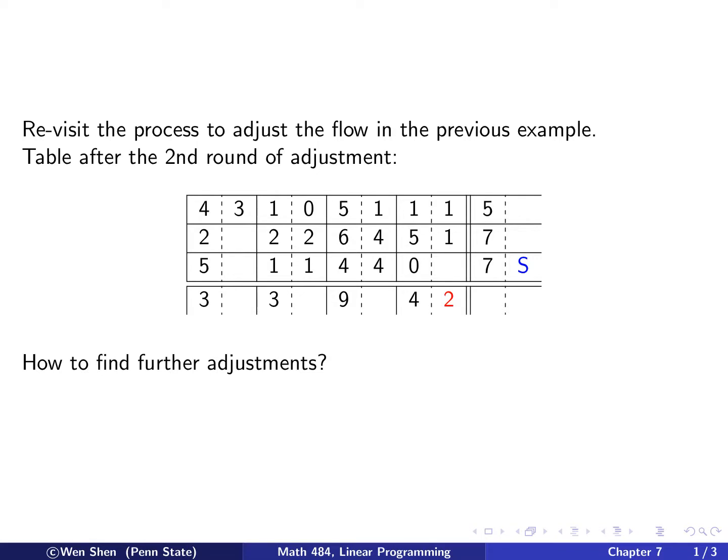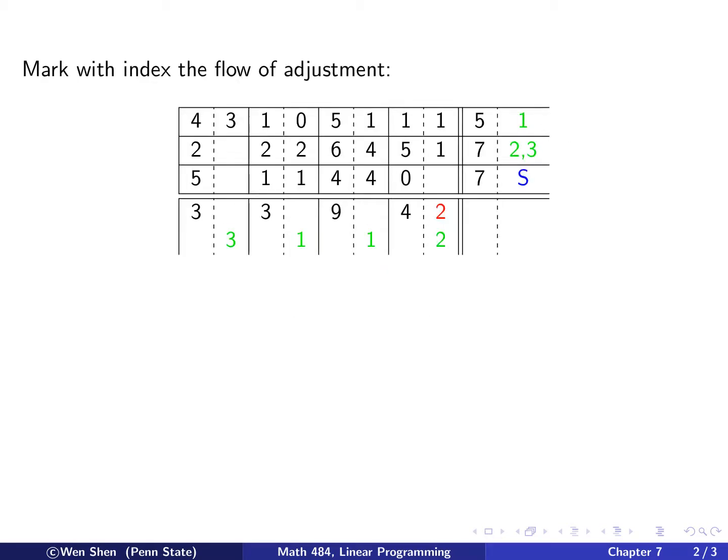So how do we find the adjustment? How do we see where this flow can be, meaning the surplus can flow through this relation and end up in D4? So here we are going to explain an algorithm. Let's look at this chart and I'm going to mark with index all the possible adjustments with the following procedure. So we mark, first we mark the rows with surplus, mark it with S. So here we see only the third row has surplus and then we mark this S. That's the first step.